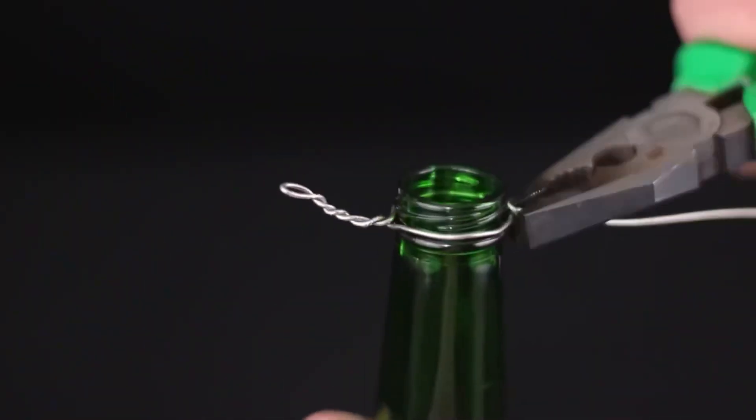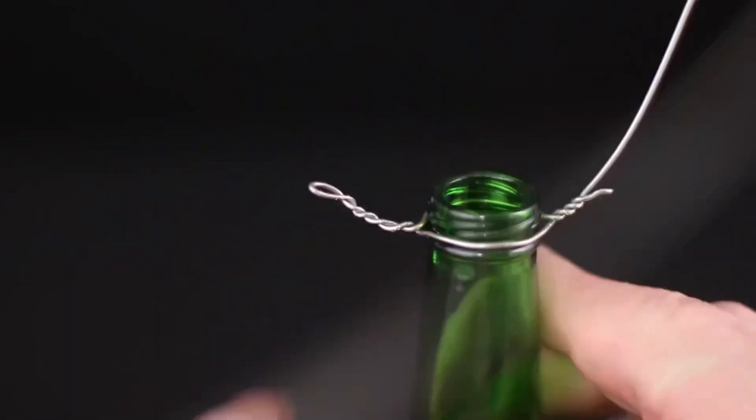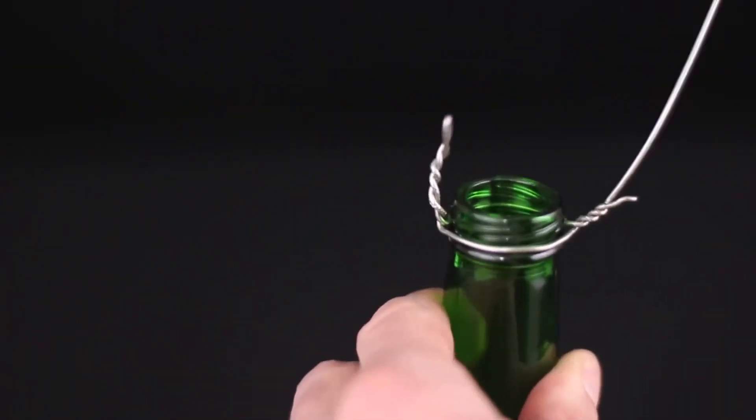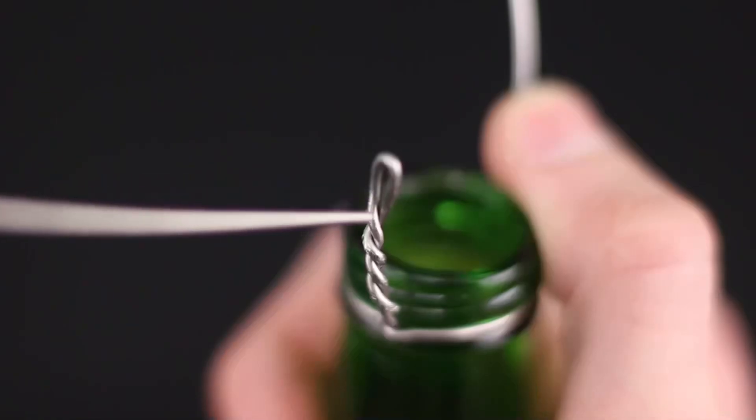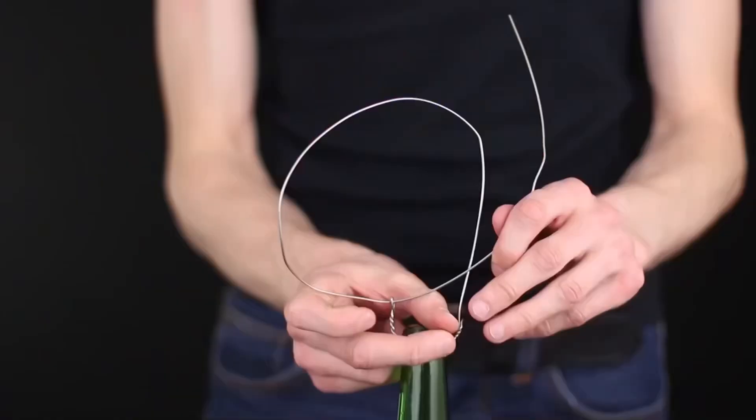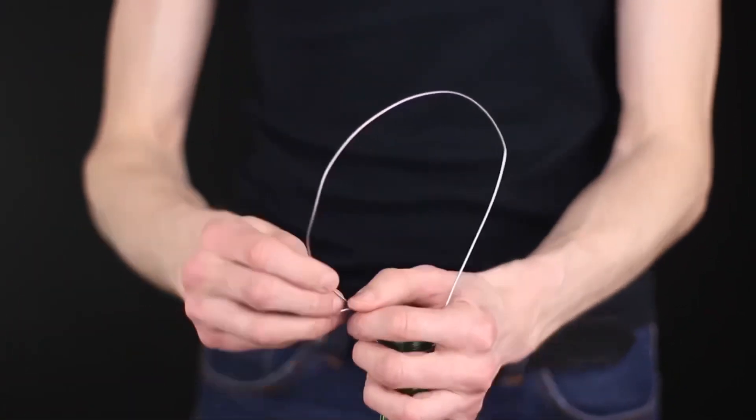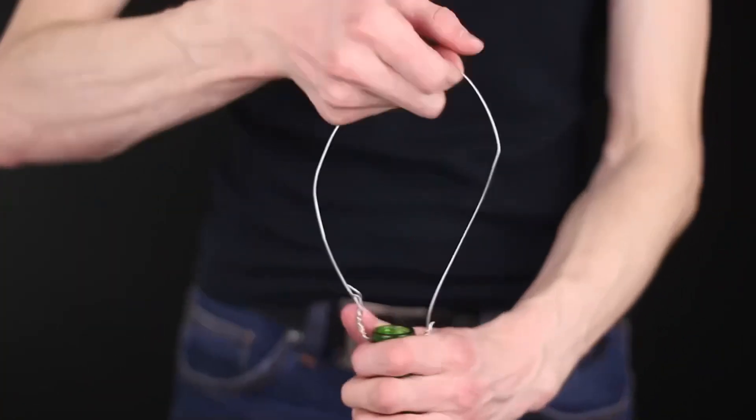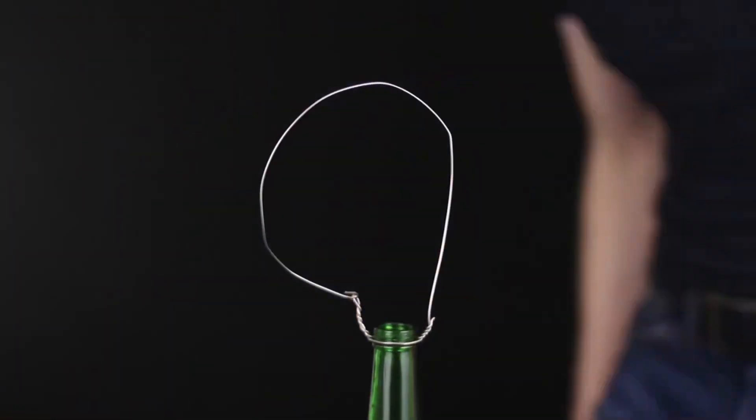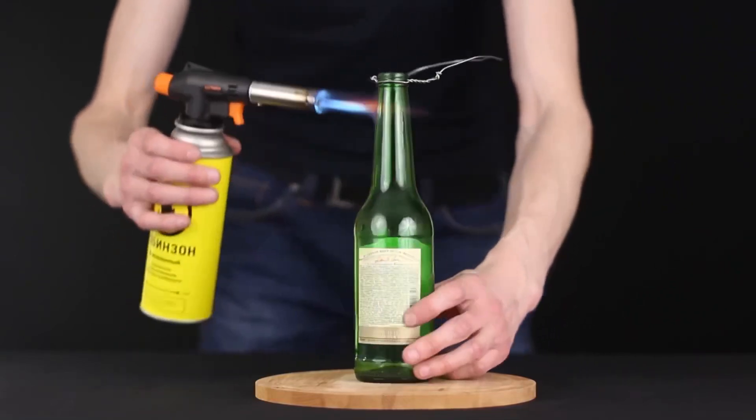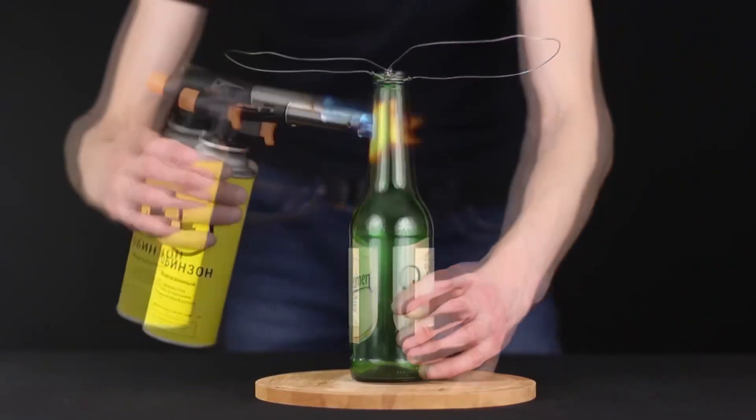We wrap the neck of the bottle with wire and twist it, and pull the free end into the resulting loop. Cut off the excess and twist it for reliability. It turns out to be such a handle.